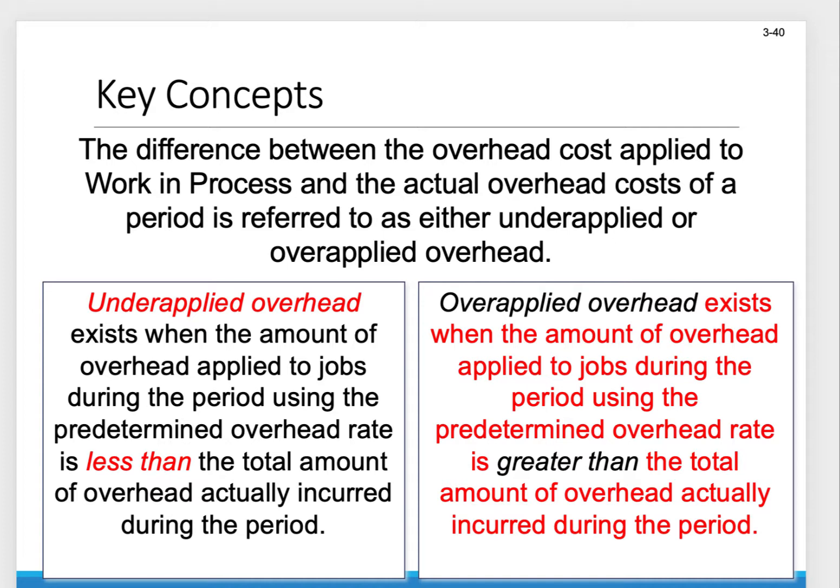Overapplied overhead, on the other hand, happens when the amount of overhead that we apply to those jobs — again using the predetermined rate — is more than the total overhead costs that actually were incurred during the period.